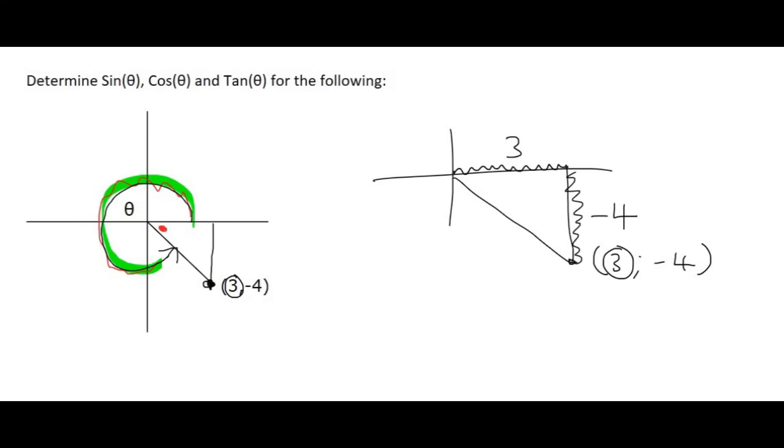And this part over here, we will call that minus 4. Although its length is not minus 4, it's only going to have a length of positive 4. You can't have a negative length. But because it's in the negative y axis, we will call that a negative 4.